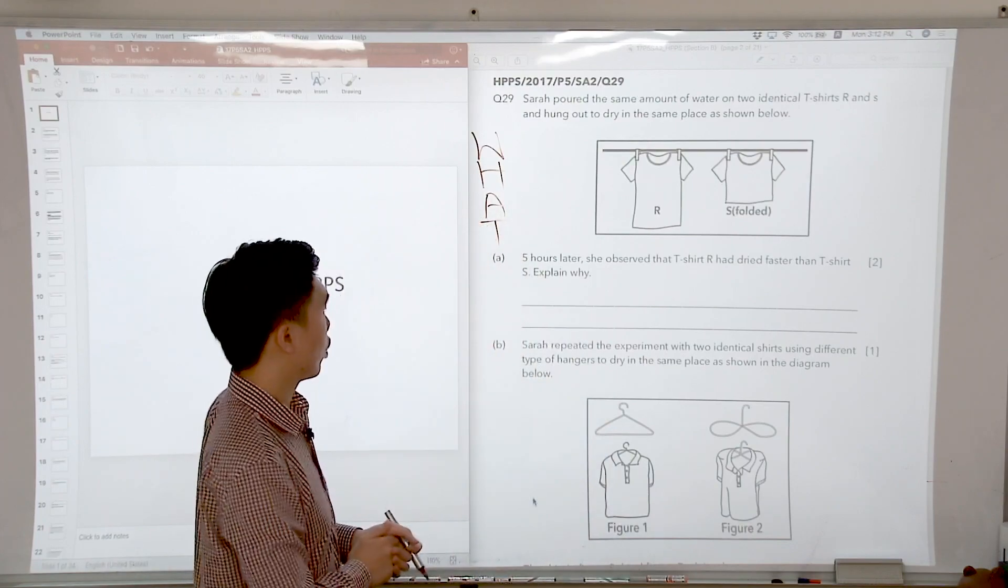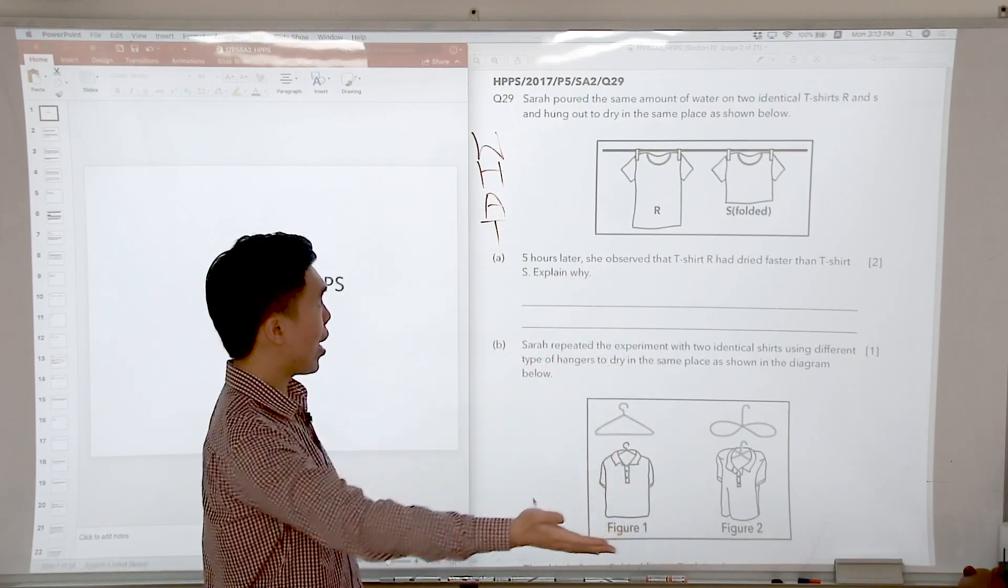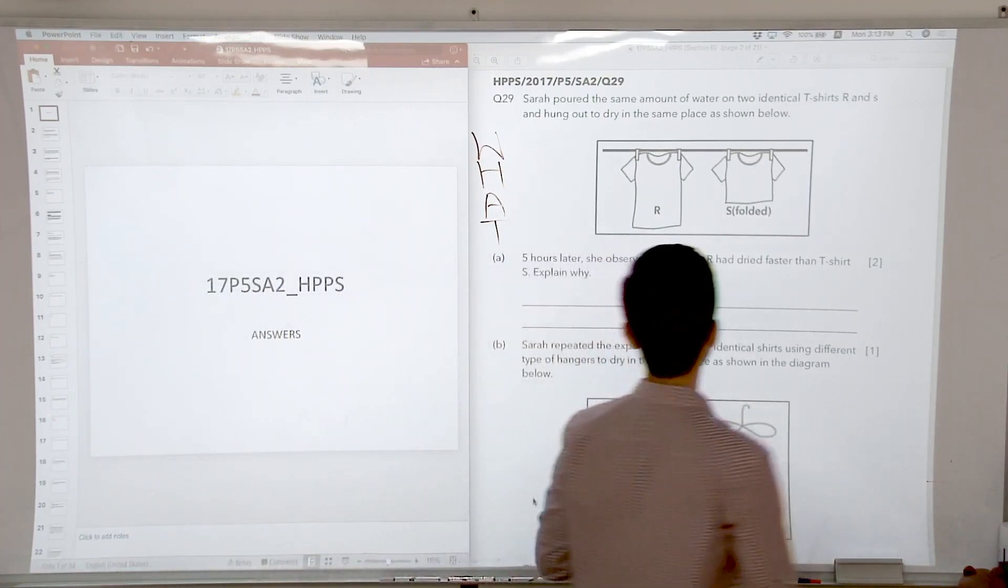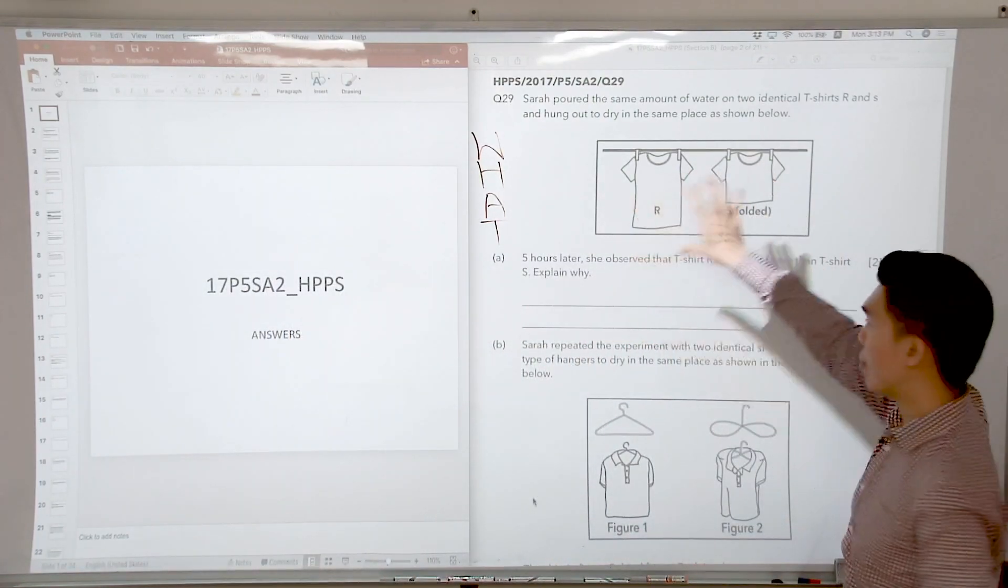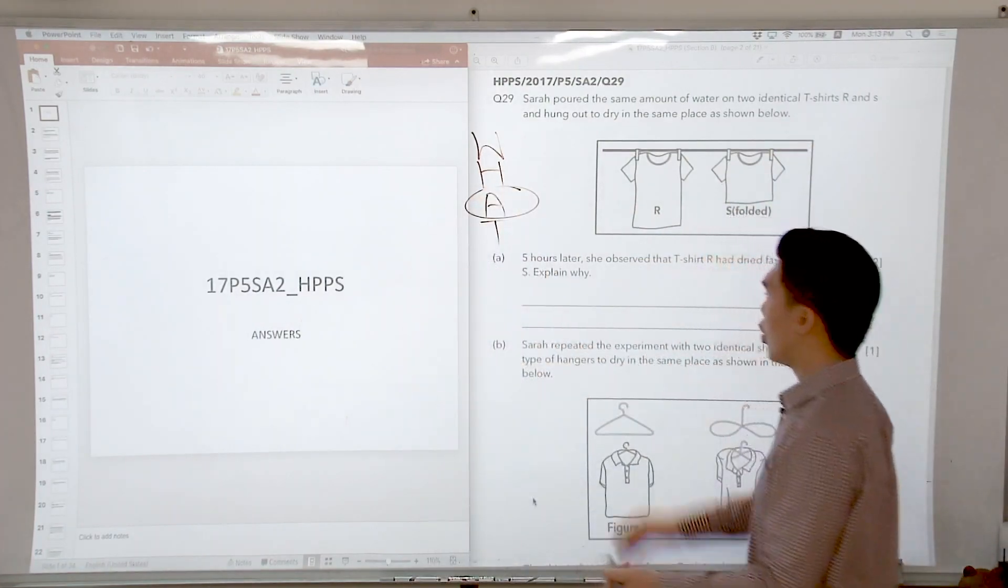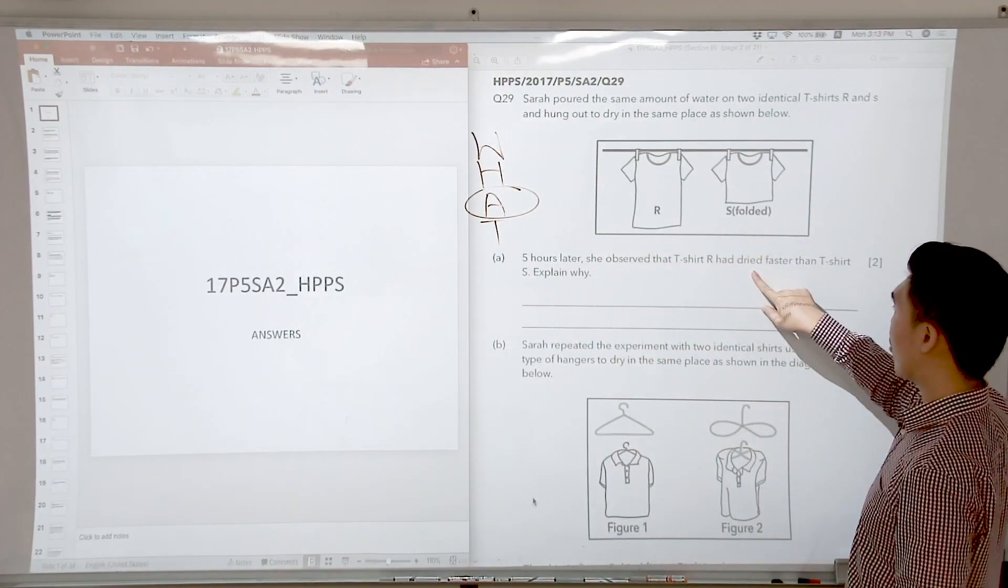Let's look at the first part of the question. T-shirt R dried faster than T-shirt S. It is one of the four factors of evaporation. Which one are we going to focus on? One is folded, one is not. That means this is about exposed surface area. So five hours later, T-shirt R dried faster.